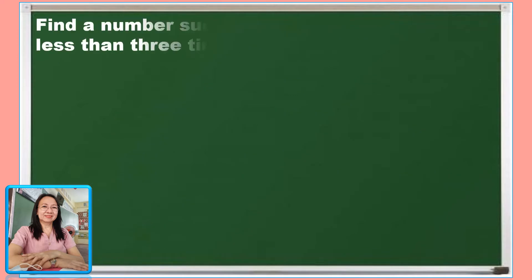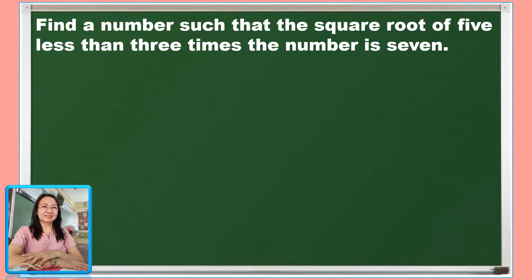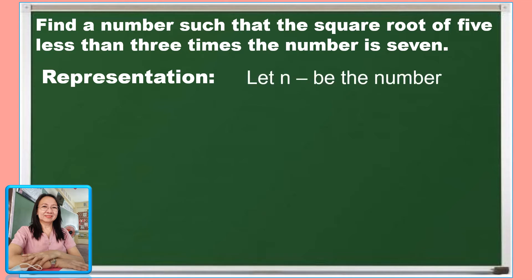Let us have the first problem. Find a number such that the square root of 5 less than 3 times the number is 7. Analyzing the problem, we are looking for the number that satisfies the situation. Let n be the unknown number. Translating each term: the square root of 5 less than 3 times the number means the square root of 3n minus 5, and 'is 7' means equals 7.